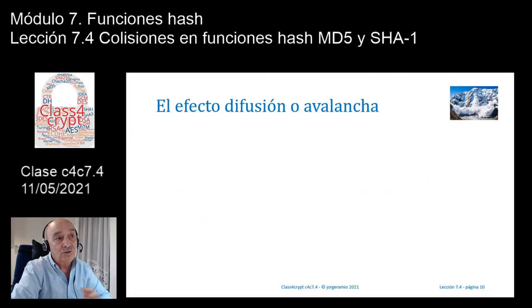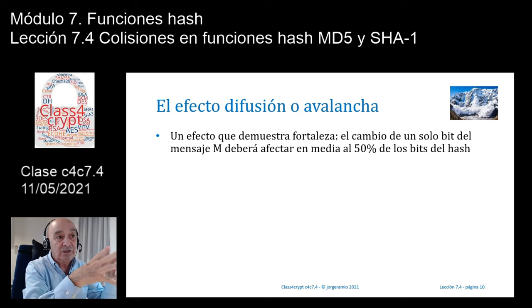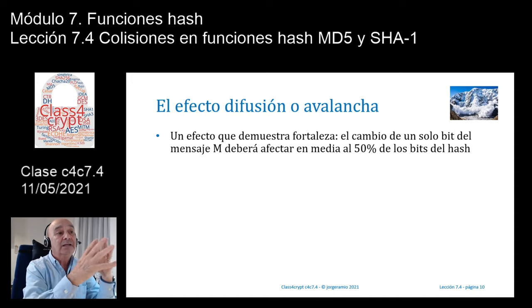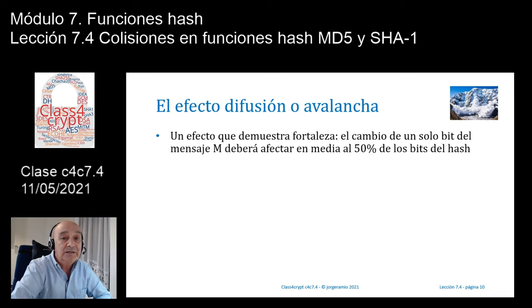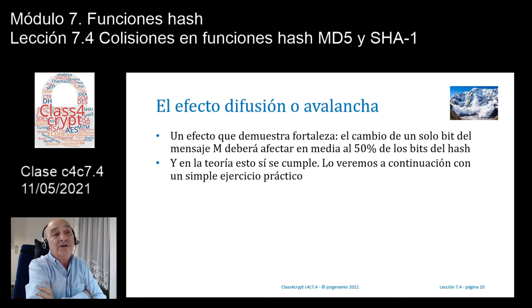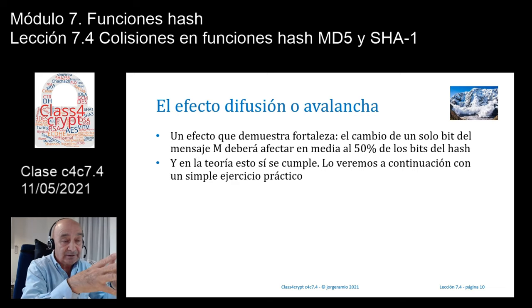Efecto de difusión o de avalancha. Podemos decir que es un efecto que demuestra la fortaleza que tienen las funciones hash. Ya lo comentamos en una clase anterior: cambiando solamente un bit de un mensaje, de un documento, de un texto, de un archivo, debería cambiar el 50% de bits en media de ese hash. Es decir, cada bit del hash va a depender de todos los bits del mensaje en un 50%, y eso debería afectar más o menos al 50% de bits de salida del hash. Esto en teoría sí se cumple, y lo vamos a demostrar a continuación con un simple ejercicio práctico.